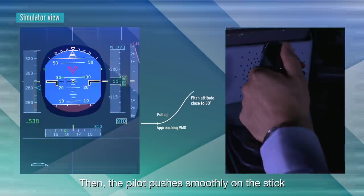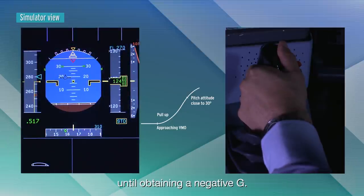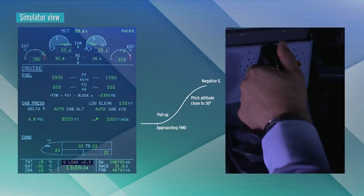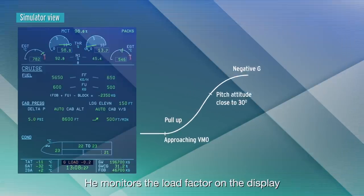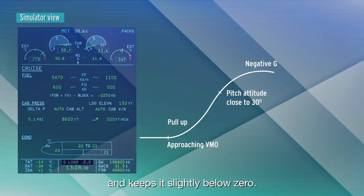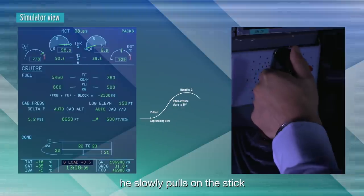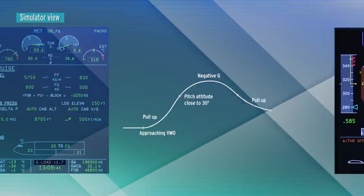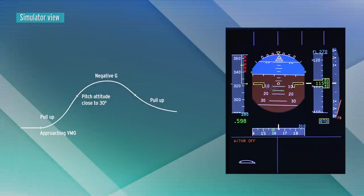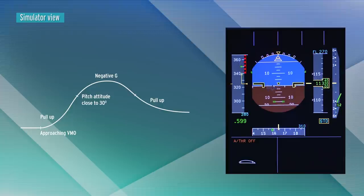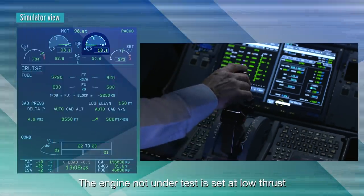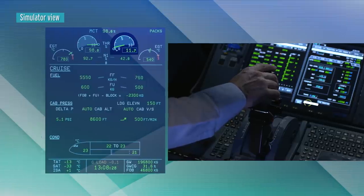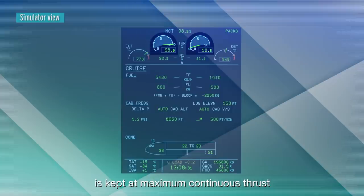Then the pilot pushes smoothly on the stick until obtaining a negative G. He monitors the load factor on the display and keeps it slightly below zero. After seven seconds in negative G, he slowly pulls on the stick to recover normal flight conditions. The engine not under test is set at low thrust when pushing on the stick. The engine under test is kept at maximum continuous thrust until full recovery for the various systems.